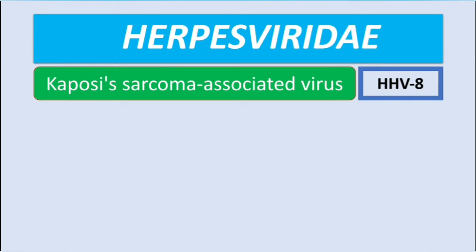In some videos we were repeating general features of viruses in the Herpesviridae family. These viruses are DNA viruses, double-stranded and linear. They replicate in the nucleus of the host cell, and they all have an envelope which they derive from the nuclear envelope of the host, not from the cell membrane like viruses that replicate in the cytoplasm.